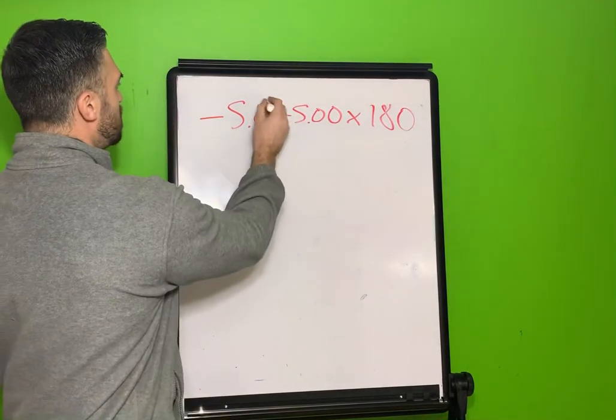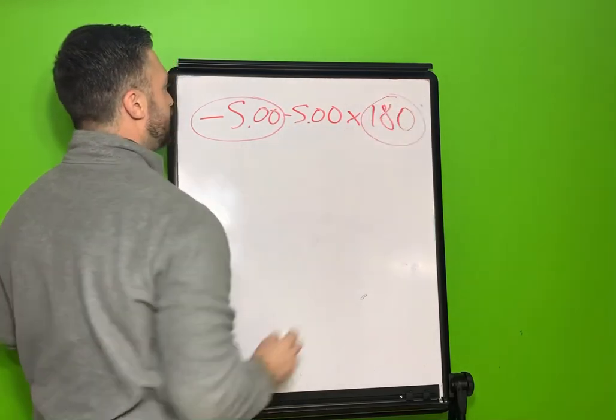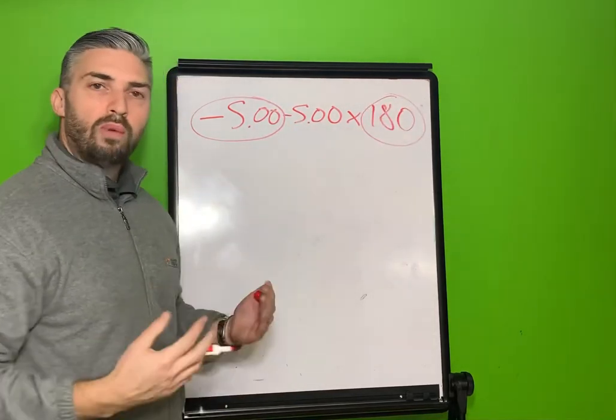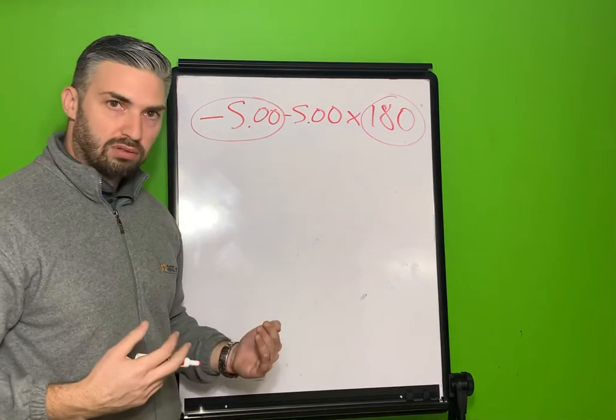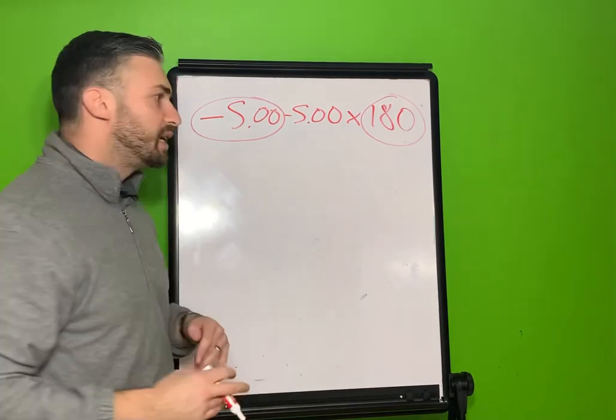So for these examples, you have to calculate the power at both meridians. So first we see negative 5 at 180. So what we want to do is to write these on the optical cross and calculate for the two major meridians separately.